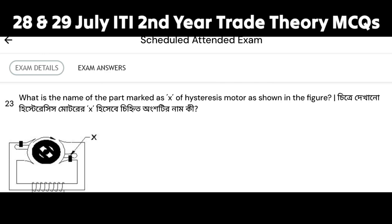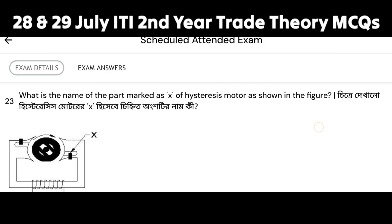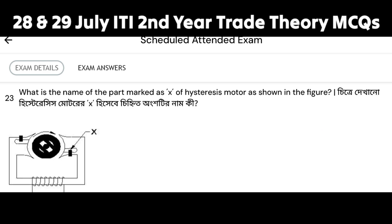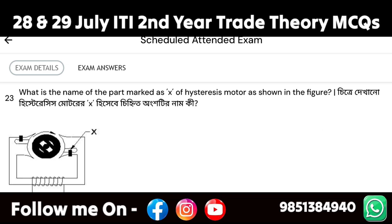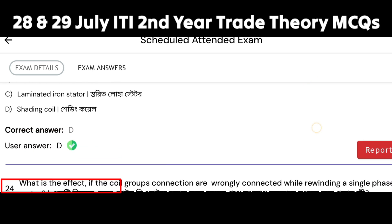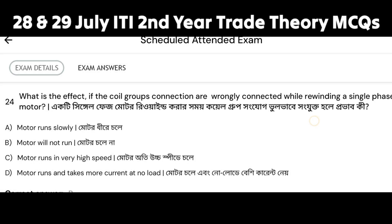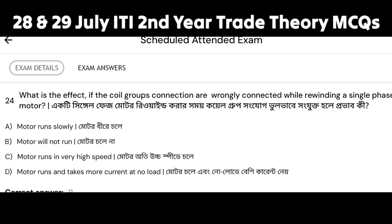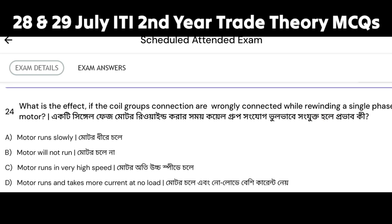What is the name of the part marked as X of the single-phase motor? Next question: what is the effect if the coil groups are wrongly connected while rewinding a single-phase motor? The options are: motor runs slowly, motor will not run, motor runs at very high speed, motor runs and takes more current at load. When connected wrongly, the flux direction is opposite, so the motor will not run. Option B is the correct answer.